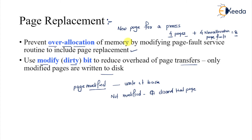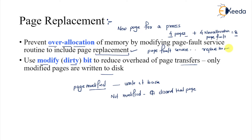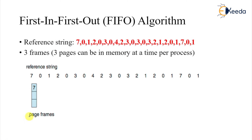To prevent over-allocation, we modify the page fault service routine to include page replacement. So in a page fault service routine, the responsibility is not only to bring the page but also to replace a page. That is one of the two things required for page replacement policy, and we are now here with our first algorithm — First In First Out.